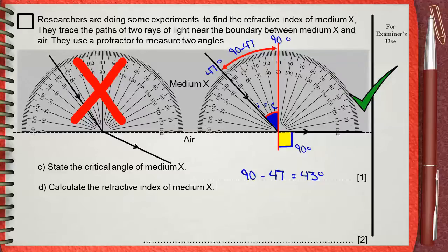In D, to calculate the refractive index of medium X, we have another rule for the refractive index. Remember from before, we said sine angle in air divided by sine angle in medium. We also had refractive index equals speed of light in air divided by speed of light in medium. And here is a third rule, which is refractive index equals 1 divided by sine the critical angle.